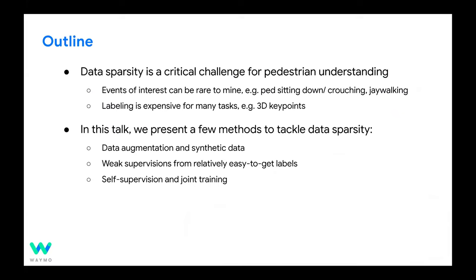We find a lot of events of interest that are really rare. For example, you will see pedestrians sitting down or crouching in the street, some of them jaywalking, most of them confined to traffic rows. These are very rare events and it's really hard to find them in the data.